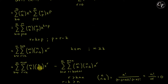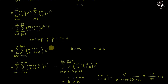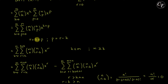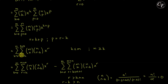Now we transform this expression by substituting the variable p with r using the relationship r equals k plus p, which we rearrange to p equals r minus k. By this transformation, p becomes r minus k, and k plus p becomes r. When p equals 0, r equals k; and when p equals n, r equals k plus n. So the new inner summation runs from r equal to k up to k plus n.